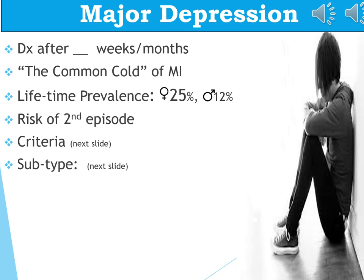Let's start the chapter considering major depression. The other terms interchangeable with it are major depressive disorder and unipolar depression. The diagnosis comes after two weeks of symptoms. It's so common that it gets the name 'the common cold of mental illness.' Lifetime prevalence differs by gender — one in four women, 25%, will have one or more episodes of major depression, and about half that number of men.